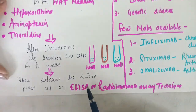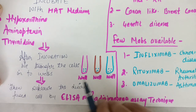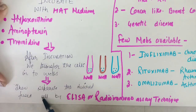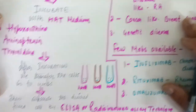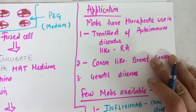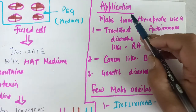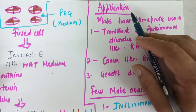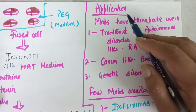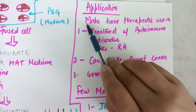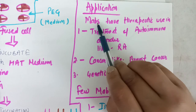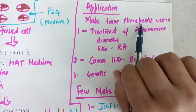Hybridoma technology is used for producing monoclonal antibodies. First of all, we have to understand what monoclonal antibodies are. Monoclonal antibodies are those antibodies which you obtain from a single clone of plasma cells. We call activated B cells — when B cells are activated in response to an antigen, they become plasma cells. The antibody obtained from a single clone of plasma cells is called a monoclonal antibody.